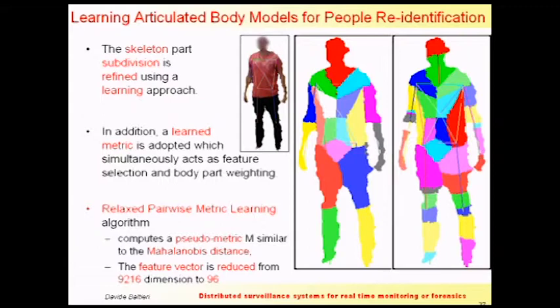This is the starting point and this is what we obtained after four days of computation. I also employed Relaxed Pairwise Metric Learning to learn the matching function instead of writing it manually. Relaxed Pairwise Metric Learning is a system that learns a pseudometric — not a real metric — on which you can then use the Mahalanobis distance to measure the similarity between two people.